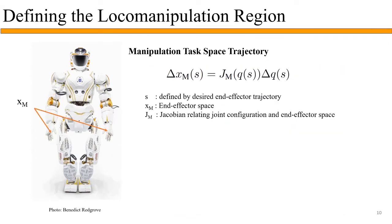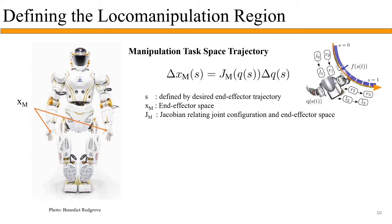Next, we define the manipulation constraint. The problem definition already provides the manipulation trajectory, which is parameterized by a variable s. Similar to the locomotion constraint manifold, the task space changes of the end effector along the trajectory are related to joint space changes with a Jacobian matrix.